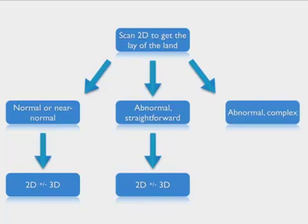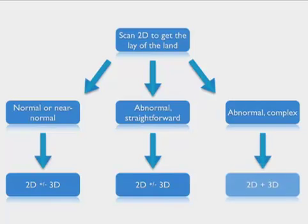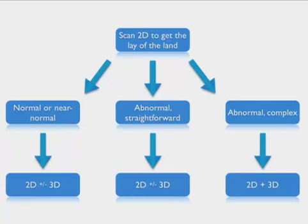Where I'm tending to use 3D these days is for the abnormal complex cases that I want to analyze offline later on. The advantage is you don't have to work everything out while the patient is still in the scanning suite — you've acquired the volume and you can work with it on the workstation later. Primarily using multiplanar imaging, you can interrogate that volume in multiple different planes and hopefully come out with a better idea of the relationships between normal and abnormal structures.